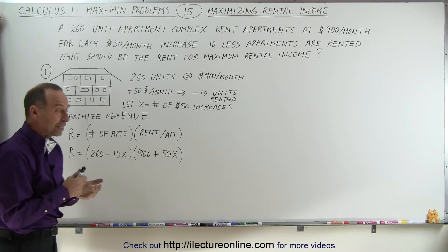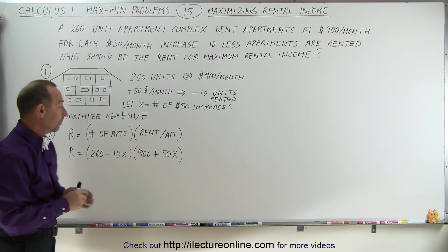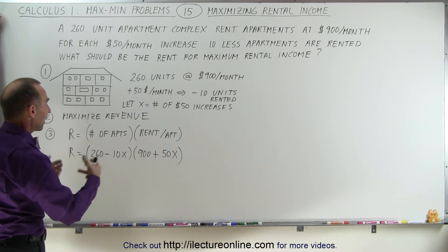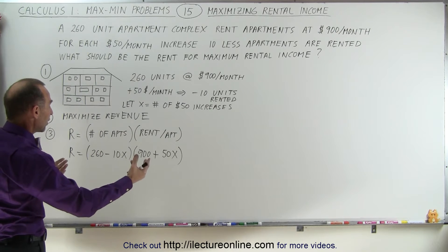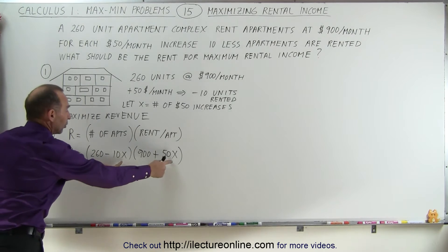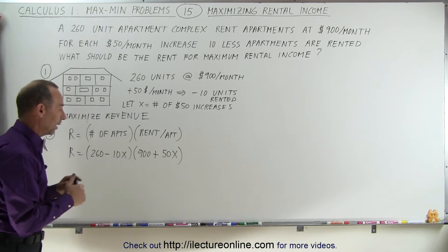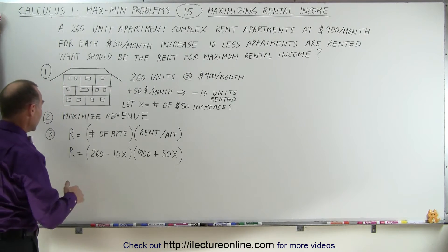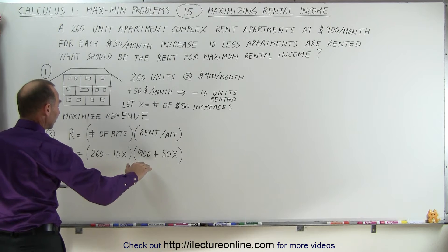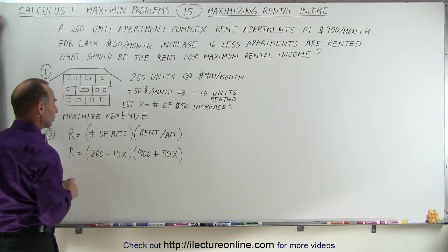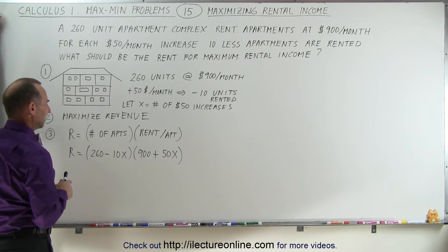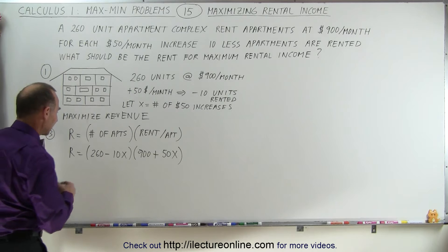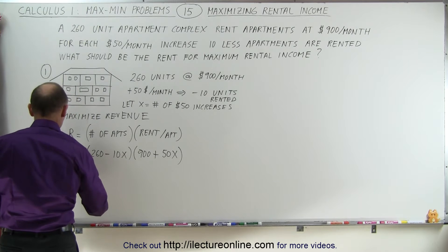We can skip steps four and five because there's no constraint needed and there's only one variable. So we jump directly to step six: take the derivative and set it equal to zero. First, let's multiply out the equation to get a better format.